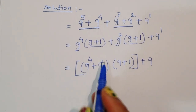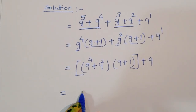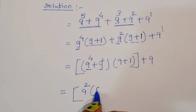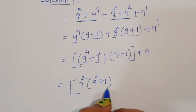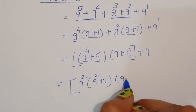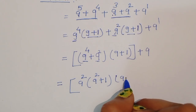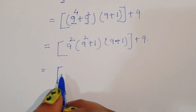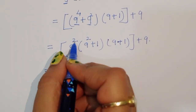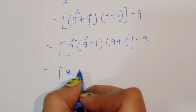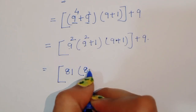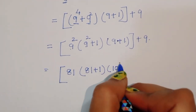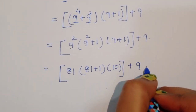Now from the term 9 power 4 plus 9 power 2, we can again take 9 power 2 common. Taking 9 power 2 common gives 9 power 2 plus 1. So we write 9 power 2 times 9 power 2 plus 1, times 9 plus 1, plus 9. Now 9 power 2 is 81, so this becomes 81 times 82 times 10 plus 9.